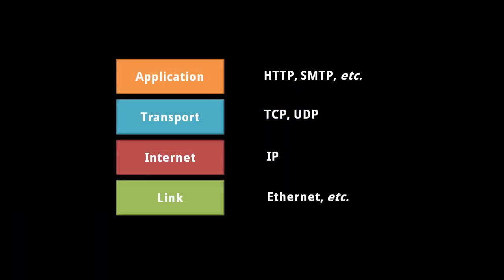Finally, the application layer refers to the application-specific protocols used by various programs. Web browsers and web servers, for example, communicate using HTTP, the hypertext transfer protocol. Meanwhile, email clients and email servers communicate using SMTP, the simple mail transfer protocol. Application protocols are very numerous, so we'll only cover HTTP here.